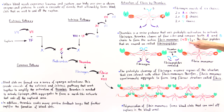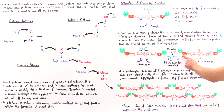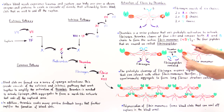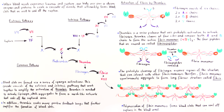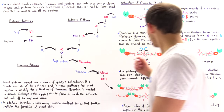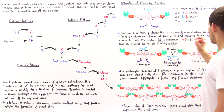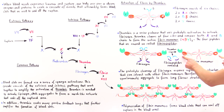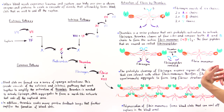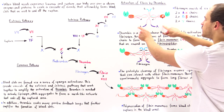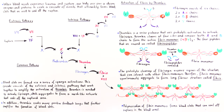The fibrin monomer consists of two orange beta subunits, two green gamma subunits, and two red alpha subunits. The purple A chains and the blue B chains have been removed as fibrinopeptides. So we have these six remaining chains forming the active fibrin monomer.